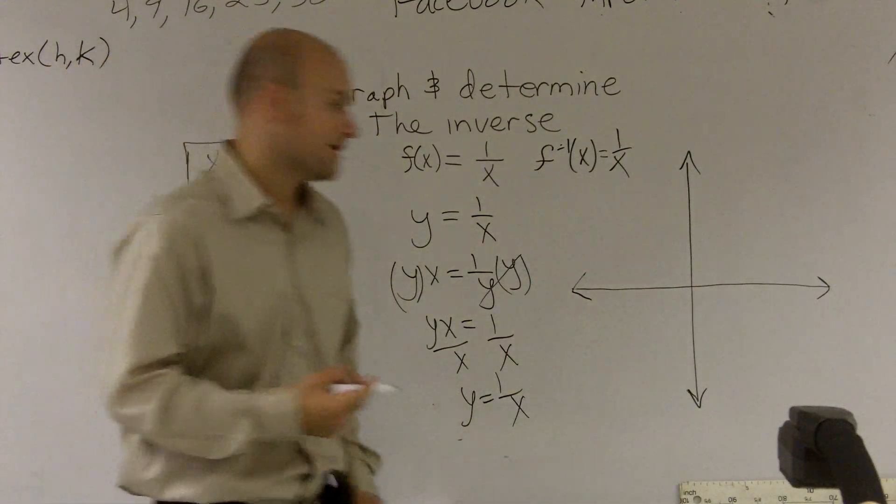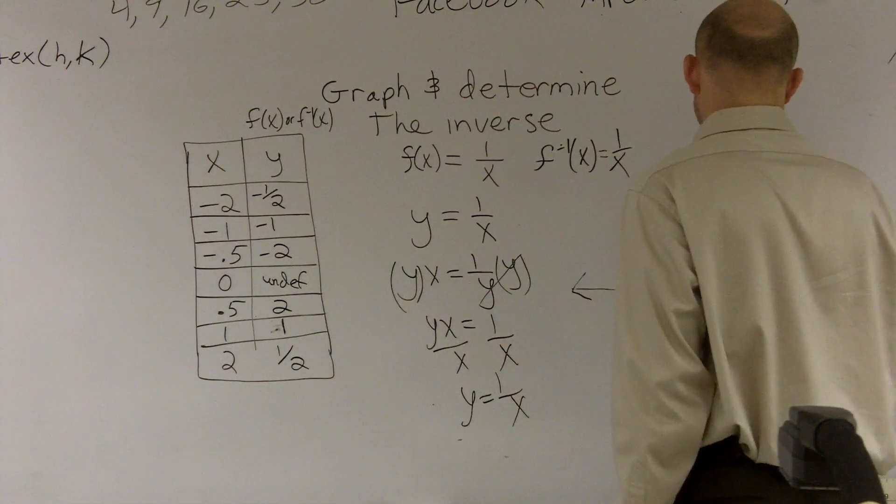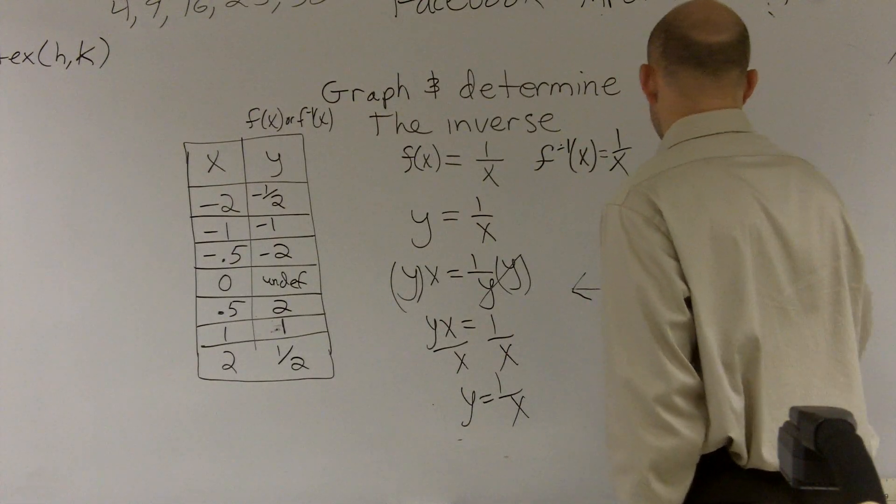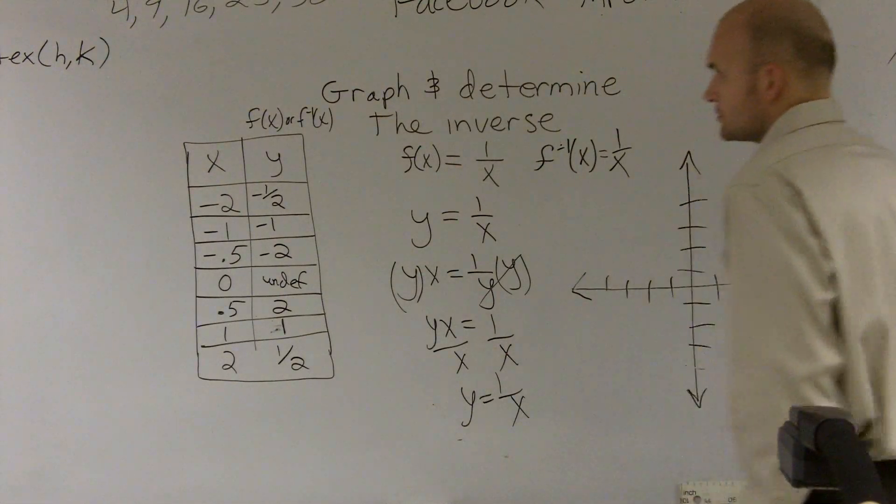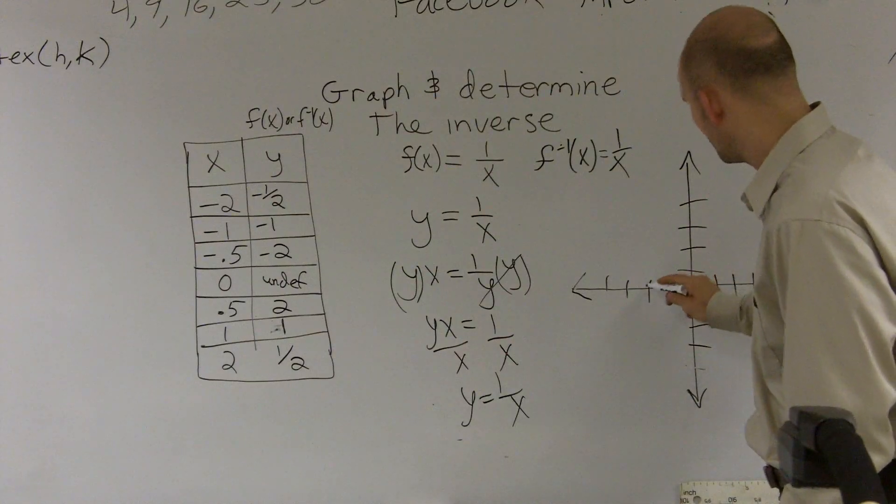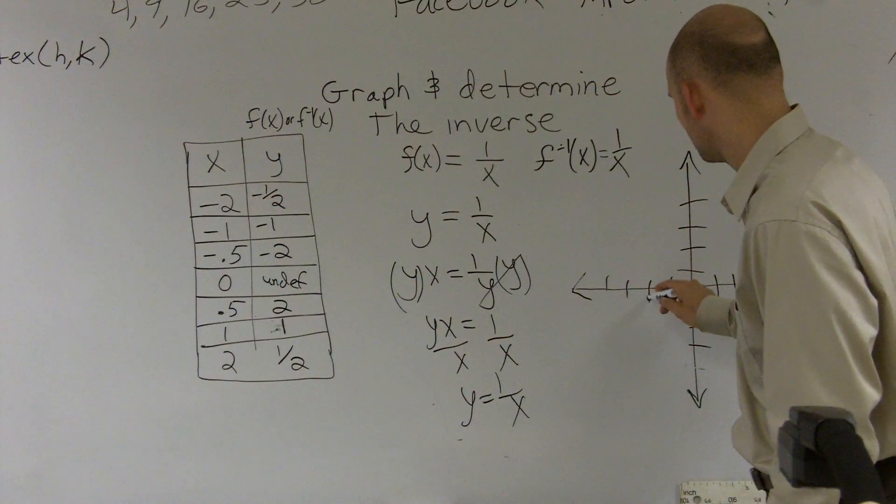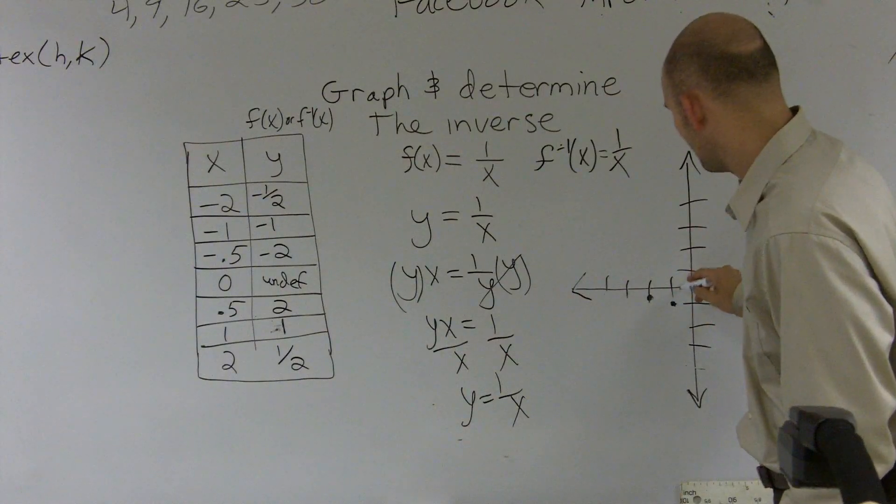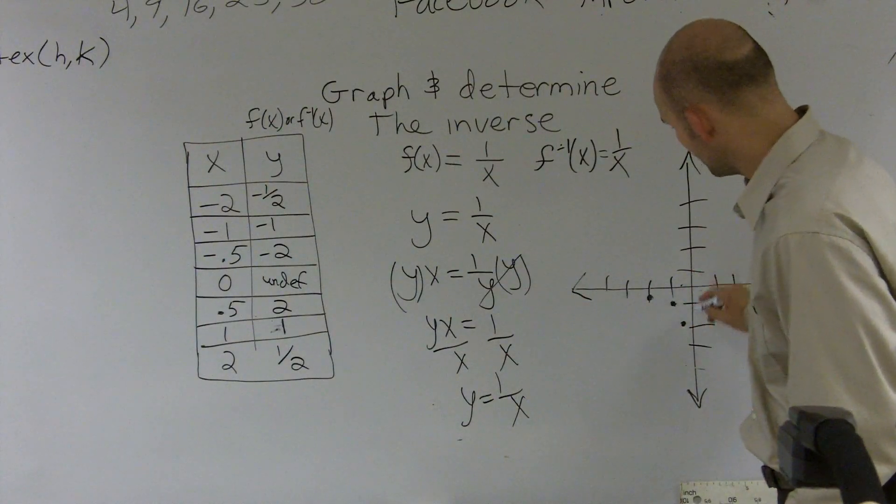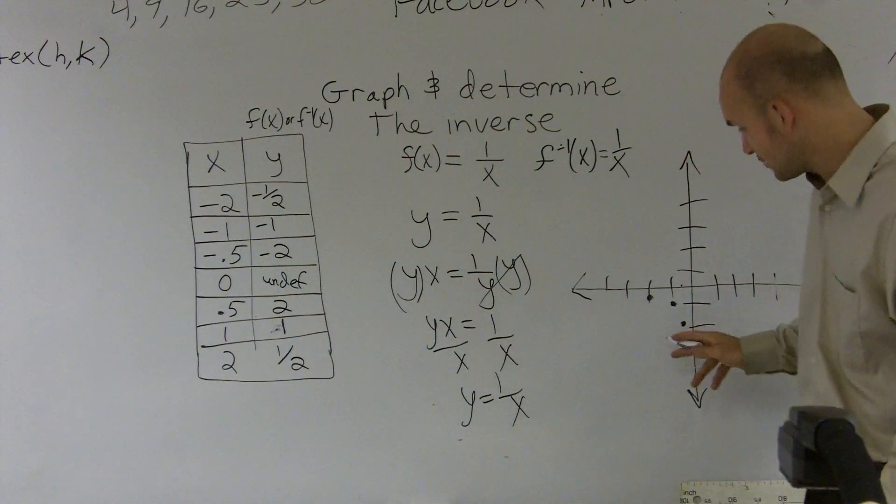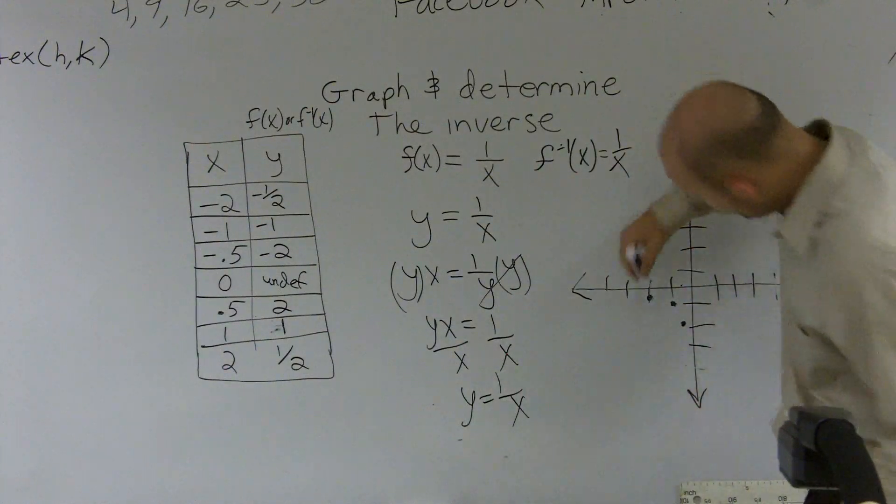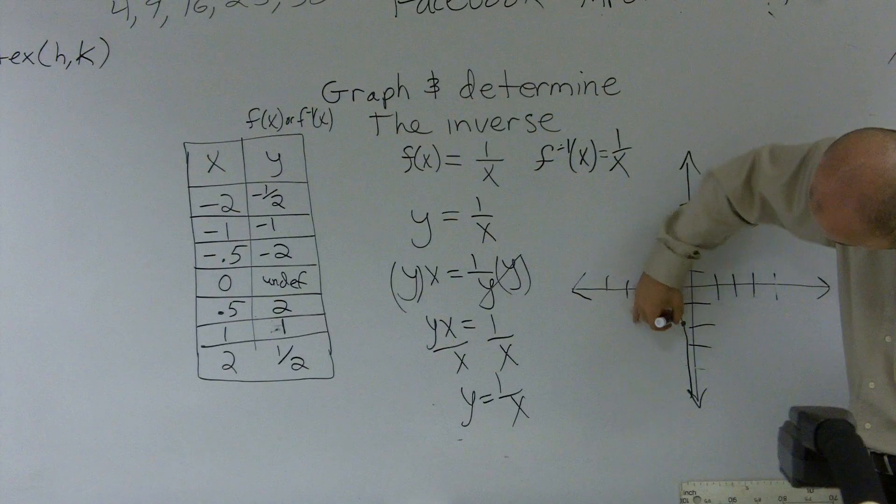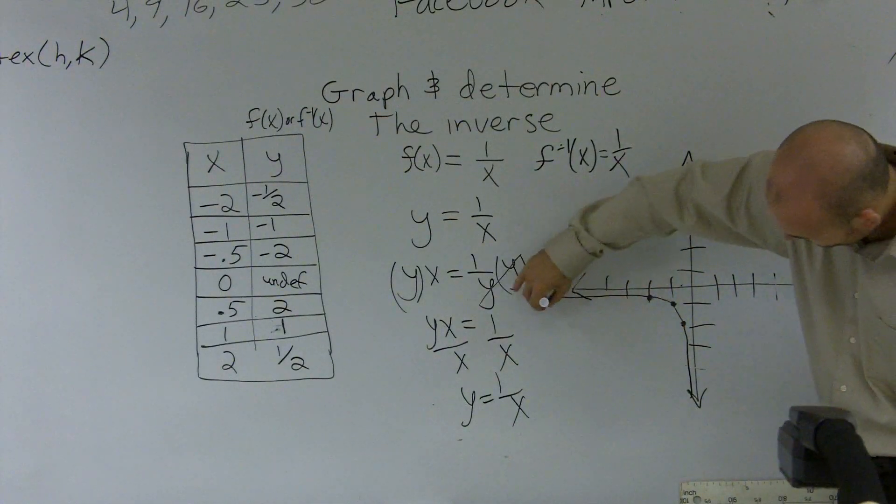So now if I was going to plot these points. So if I go down to negative 2, negative 1 half would be about halfway. Negative 1 would be a negative 1. Negative 0.5 would be down at 2. 0 is undefined. So I know that my graph is never, ever going to touch 0. So I'm going to say my graph is going to look something like that.